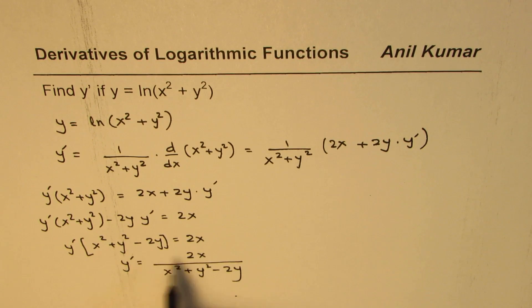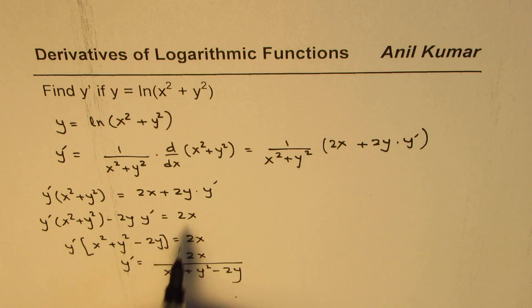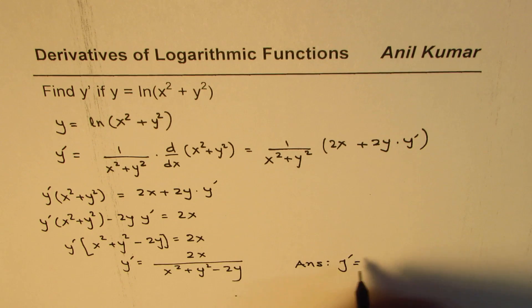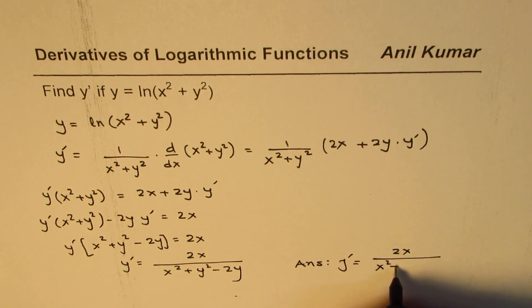So that is how we could work it out to find the derivative of the given function. The answer is y prime, or the derivative is 2x divided by x squared plus y squared minus 2y.